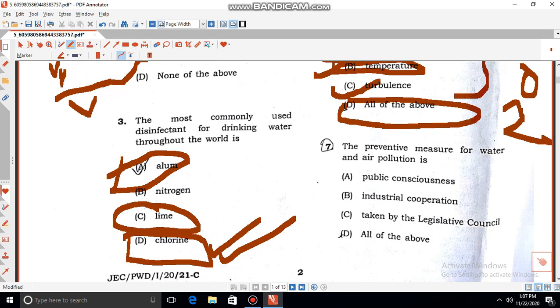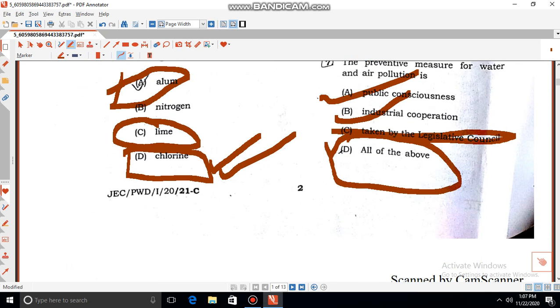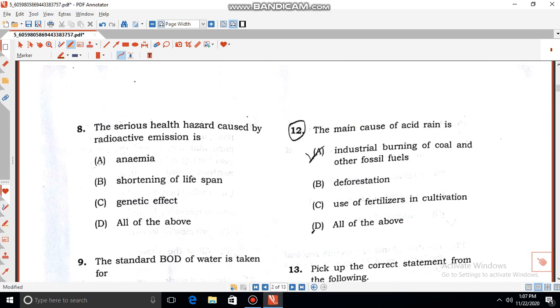Similarly, another question is the preventive measure for water and air pollution. Public consciousness - the public also should be concerned. Industry - industrial cooperation should be there. Then some steps definitely at the legislative council level. So our correct answer is all of the above.